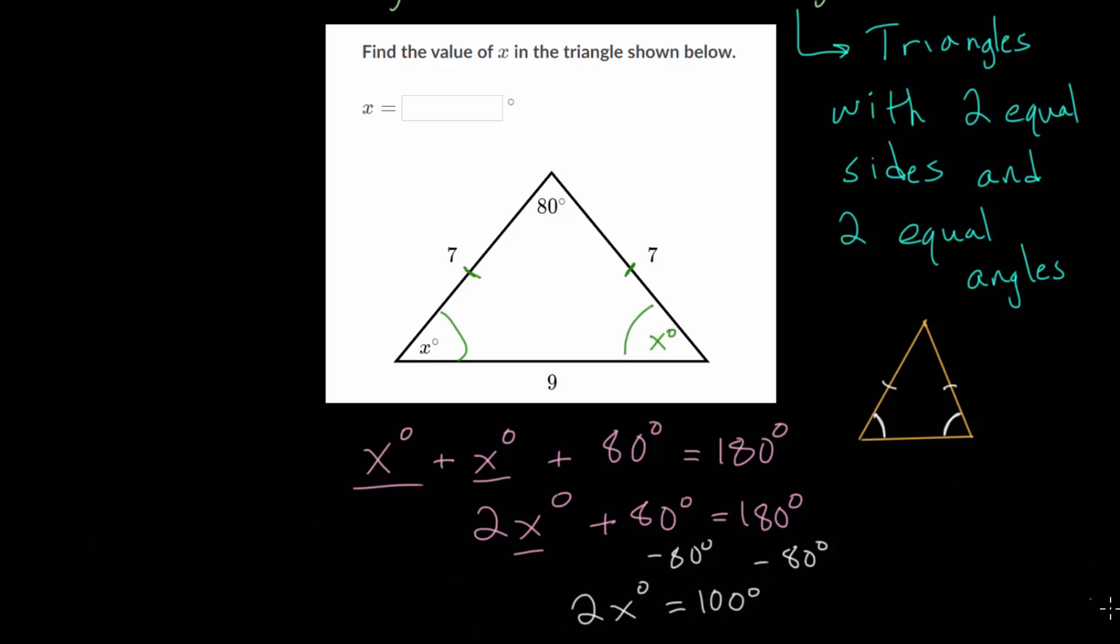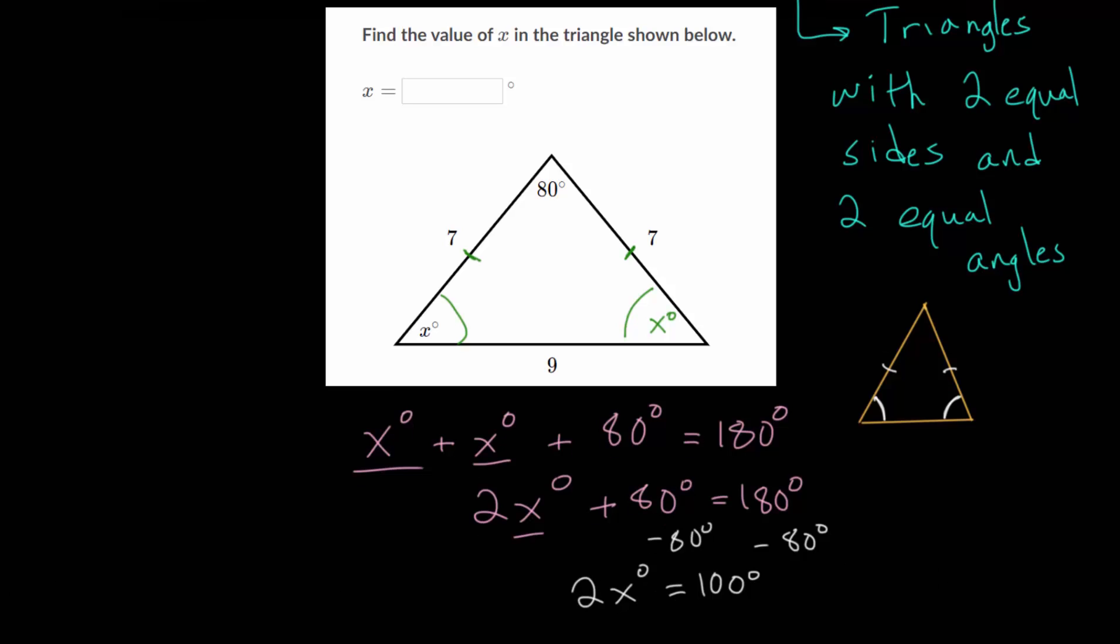And now we can just divide everything by 2, so that we get X by itself. Since 2 divided by 2, we know that's just 1. So X is 100 divided by 2. Or in other words, X is 50 degrees.